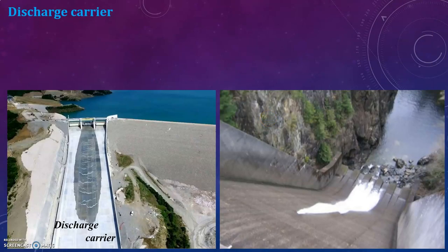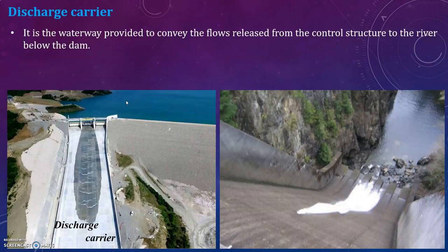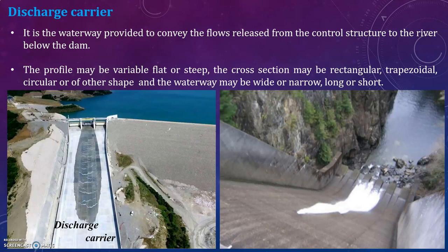The discharge carrier is the waterway provided to convey the flows released from the control structure to the river below the dam. The profile may be variable, flat, or steep. The cross section may be rectangular, trapezoidal, circular, or of other shapes, and the waterway may be wide or narrow, long or short.